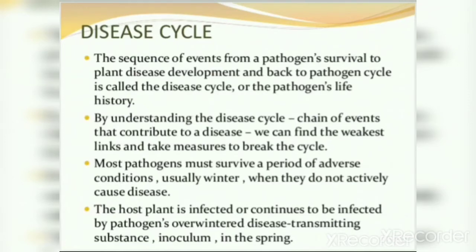This is called the disease cycle. Where did the pathogen come from? Where did it survive? In many cases it survives in the soil; when the crop grows it goes to its host, then it reproduces and creates damage, and the pathogen cycle continues. This is the primary cycle. The pathogen then moves from host to host — that is the secondary disease cycle. By understanding the disease cycle and the chain of events contributing to disease, we can find the weakest link and take measures to break the cycle, reducing the harmful effect.